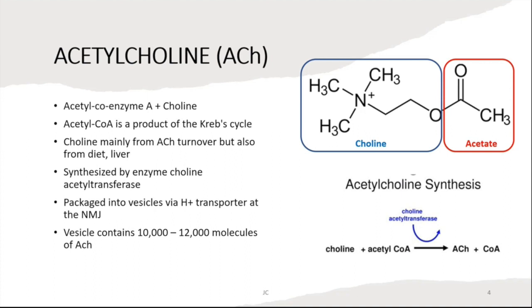Acetylcholine is effectively a product of acetyl coenzyme A and choline. The acetyl CoA comes from the Krebs cycle via aerobic respiration in mitochondria. Choline is mainly sourced from the diet — red meats and eggs — with a small amount synthesized in the liver, and most of the supply comes from turnover by acetylcholinesterase at the neuromuscular junction. It is synthesized by the enzyme choline acetyltransferase and packaged into vesicles via the hydrogen transporter. Each vesicle contains about 10,000–12,000 molecules of acetylcholine, and one vesicle alone is not enough to transmit the action potential, as the miniature end plate potential must be reached.